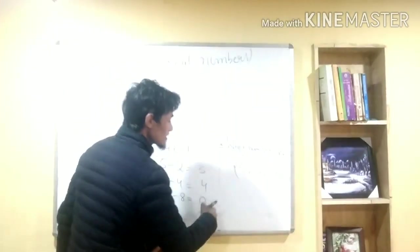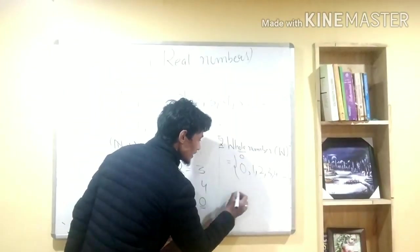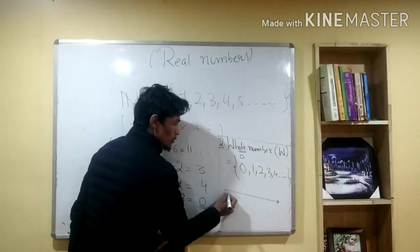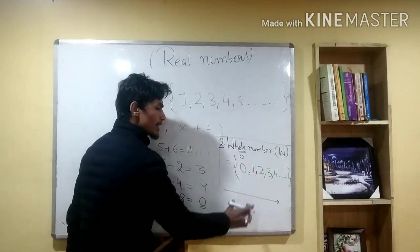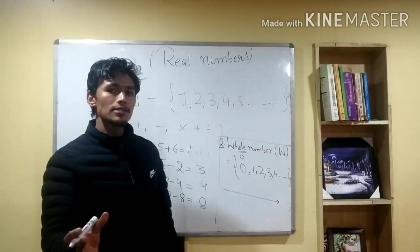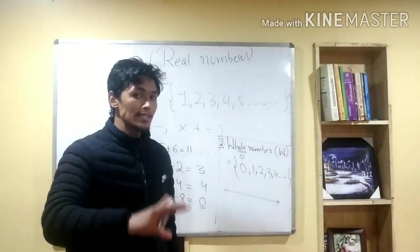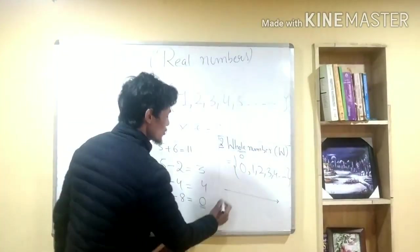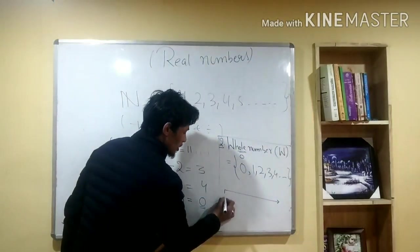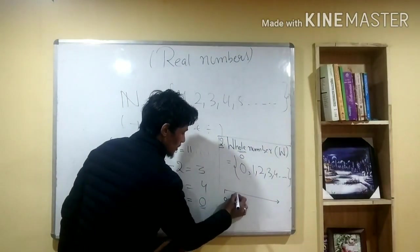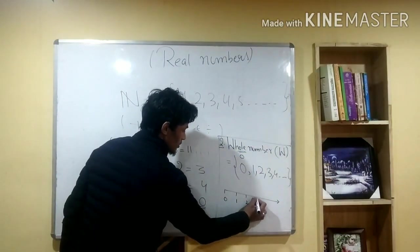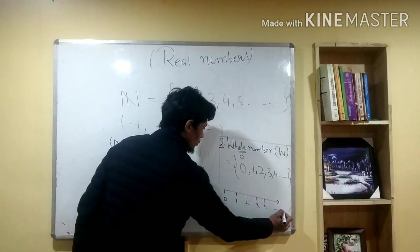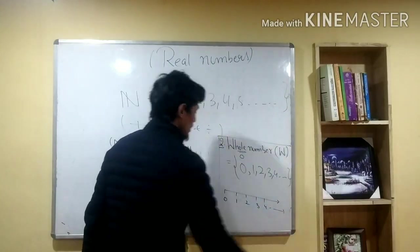When we try to look at the number line, we will try to see where the number line starts. It starts from zero. So zero, one, two, three, four, up to infinity.